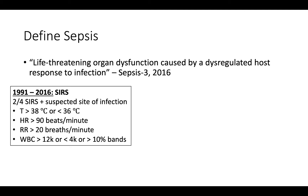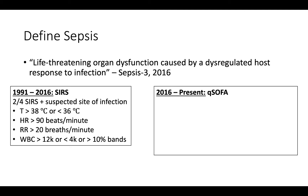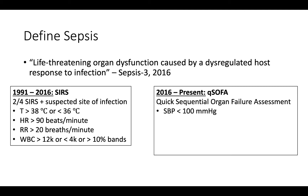What else can we use to identify the sickest patients with sepsis? The answer: qSOFA, which stands for Quick Sequential Organ Failure Assessment. It was created to identify patients with suspected infection likely to have sepsis, or patients with sepsis at high risk of deterioration or poor outcome outside of the ICU — for example, patients on the floor or in the emergency room. qSOFA is composed of three variables: systolic hypotension less than 100 mmHg, respiratory rate greater than 22 breaths per minute, and altered mental status.